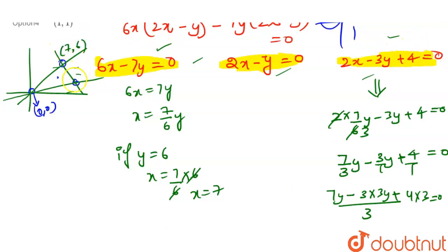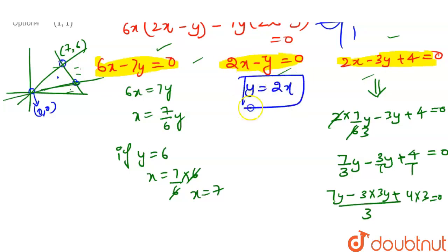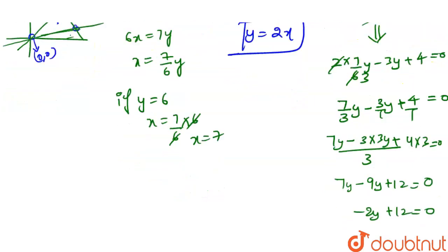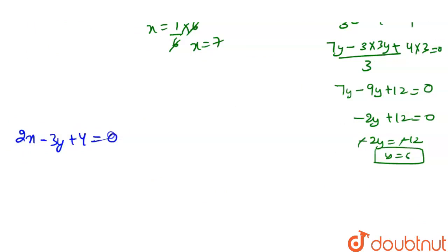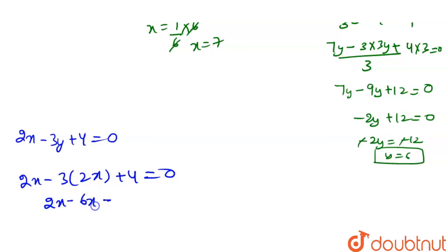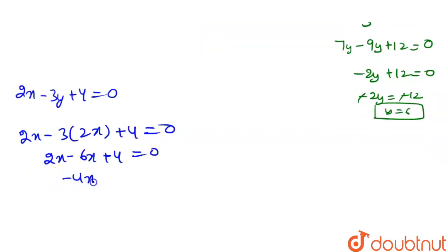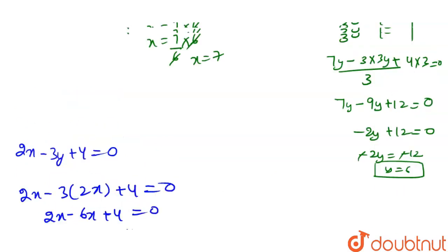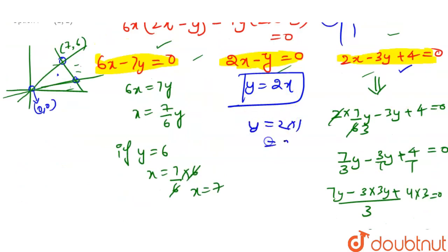Now for the second line 2x − y = 0, let y = 2x. Substituting into 2x − 3y + 4 = 0 gives 2x − 3(2x) + 4 = 0, so 2x − 6x + 4 = 0, giving −4x = −4, thus x = 1. Then y = 2. The second intersection point is (1, 2).